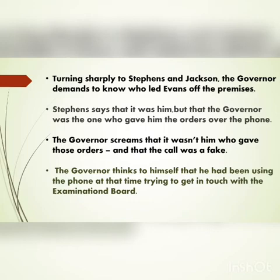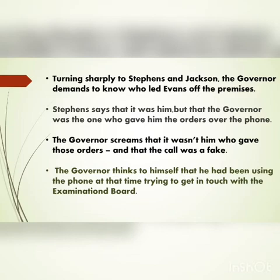The governor is really angry as he analyzes the situation. He turns sharply to Stephens and Jackson, demanding to know who led Evans off the premises. Stephens says it was him, but that the governor was the one who gave him the orders over the phone. On hearing this, the governor screams that it was not him who gave those orders — the call was fake. The person who called Stephens was not the governor but one of Evans' friends. The governor realizes that at that time he had been on the phone trying to get in touch with the examination board.